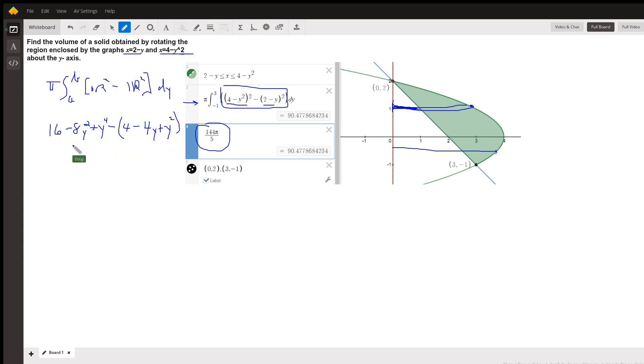If we remove the parentheses, combine similar terms, and write them in descending order, we get y to the 4th, minus 9y squared, plus 4y, plus 12. And you can verify that. This is probably stuff I would be doing on scrap paper.